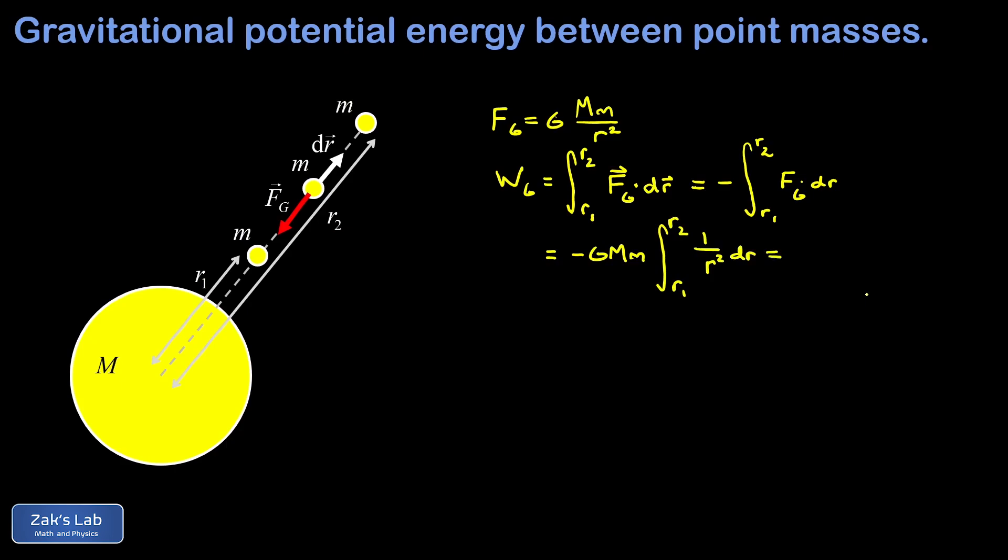When we integrate 1 over R squared, that's the same as R to the negative 2. We use the power rule on that and we get R to the negative 1 over negative 1. In other words, this produces a minus sign that's gonna wipe out the minus sign that was in front, and it produces a 1 over R.